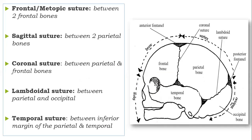Let's consider these sutures one by one. First, the frontal suture, also known as the metopic suture, is found between the two frontal bones — the bones that fuse at age eight. Second, the sagittal suture lies between the two parietal bones. The coronal suture lies between the parietal and frontal bones. The lambdoidal suture is found between the parietal and occipital bones. And the temporal suture lies between the inferior margin of the parietal and the temporal bones.